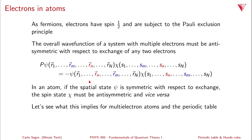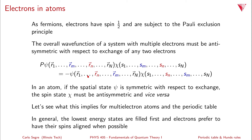Now we'll take a look at what this implies for multi-electron atoms in the periodic table. We'll make it a little simpler — we're not going to look at anti-symmetrized wave functions for 20 or 30 electrons. In general, the lowest energy states are filled first and electrons prefer to have their spins aligned when possible.